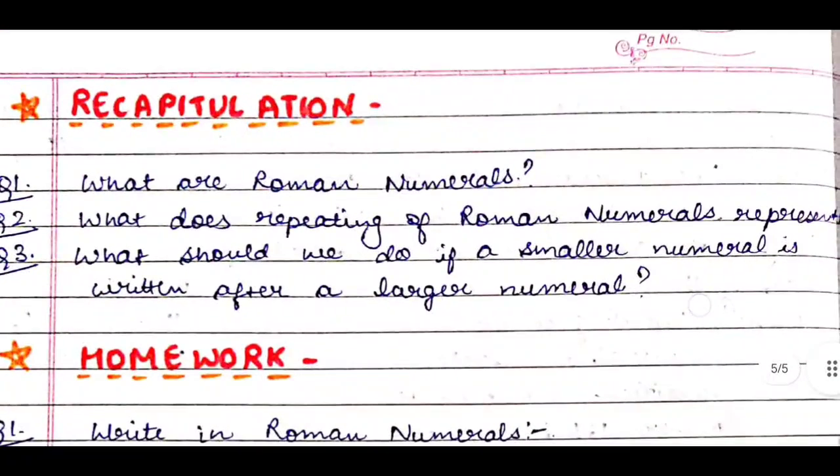After that comes recapitulation. In recapitulation, we ask questions after finishing our explanation or after teaching the concept, so that we get to know whether they have understood the concept really well or not, or what can be done to explain them in a much better way. First question: What are Roman numerals? Second: What does repeating of Roman numerals represent? Third: What should we do if a smaller numeral is written after a larger numeral?